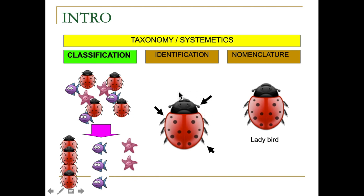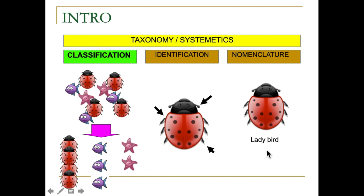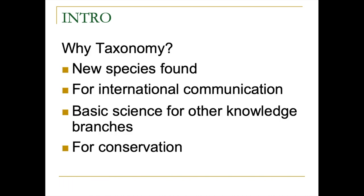The second is identification — how to identify and point out the important parts of an organism, what it looks like. Like humans, we have identification features different from dogs or birds. The last one is nomenclature — creating names for living things. We have common names like 'ladybird,' but we also have scientific names used by scientists worldwide.